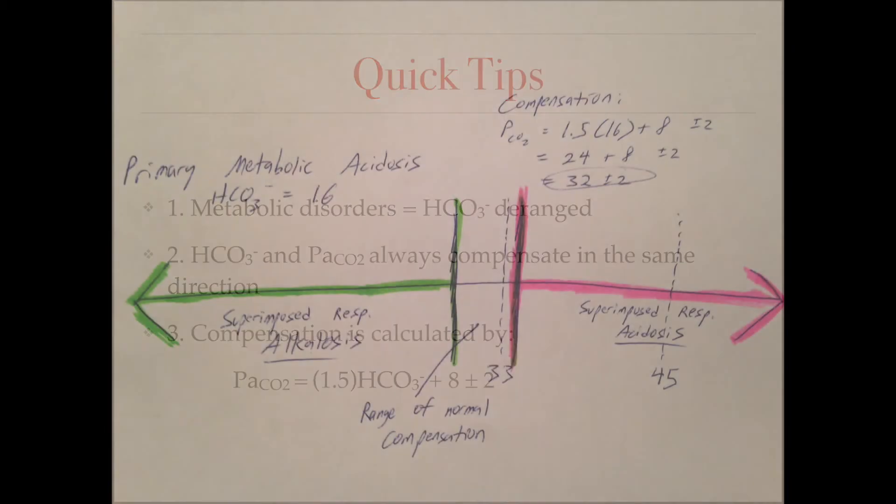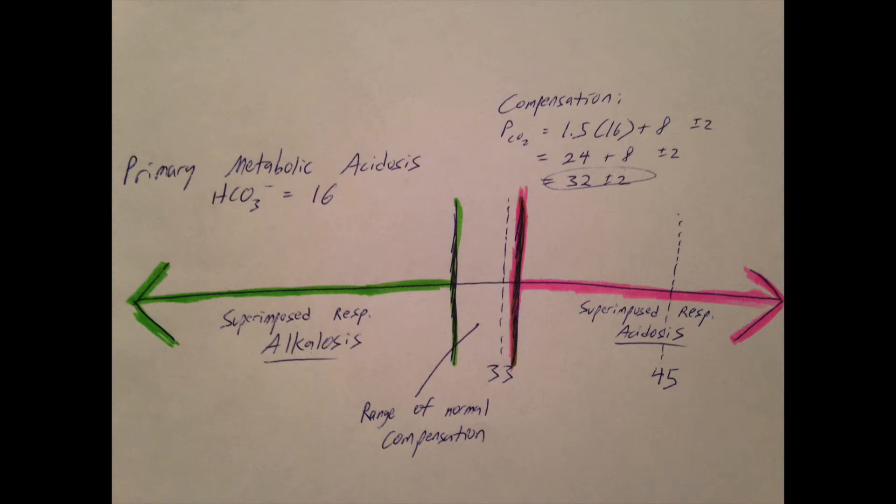Alright, now let's take a look at this diagram I drew up really quick. We're using the example of a metabolic acidosis where HCO3 is low at 16. Therefore, we'd expect PCO2 to also go down to compensate. To find out exactly how much, we use Winter's formula.